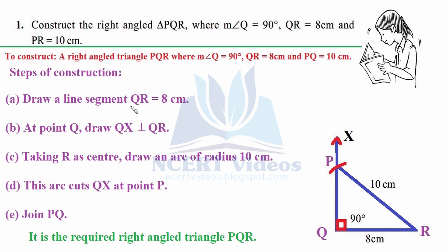Steps of construction: Part A — draw line segment QR equals 8 centimeters using a ruler. Part B — at point Q, draw QX perpendicular to QR using compasses or a protractor. Part C — taking R as center, adjust your compasses to 10 centimeters and draw an arc; wherever it cuts QX, that will be your point P. Part D — this arc cuts QX at point P; join PR to complete the required right-angled triangle PQR.